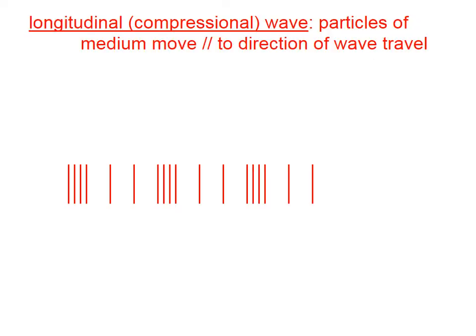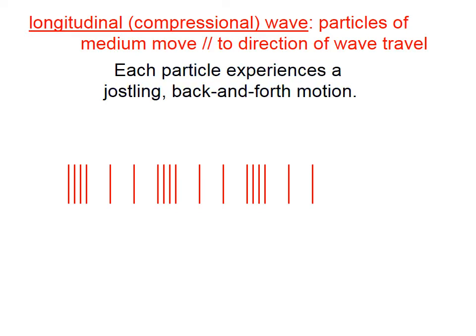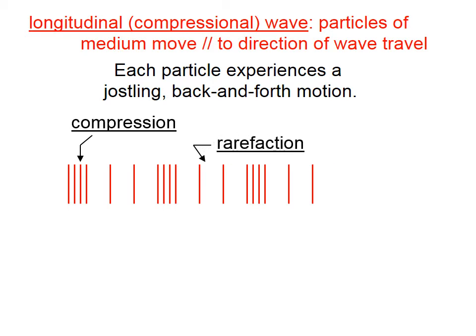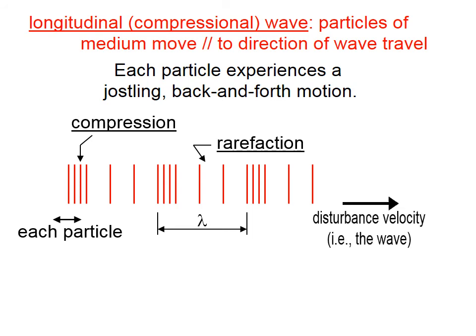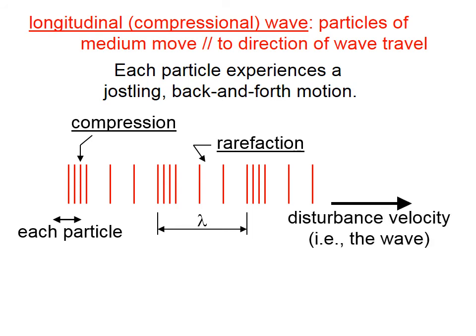A longitudinal or compressional wave is one in which the particles of the medium move parallel to the direction of wave travel. Each particle experiences a jostling back-and-forth motion. In a longitudinal wave, there are regions where the particles have a higher than normal density, and regions that have a lower than normal density. The higher-density regions are called compression regions, and the lower-density regions are called rarefactions. These rarefactions and compressions travel along with the wave disturbance — they don't stay fixed in one spot; they travel as the wave travels. Longitudinal waves also have wavelengths, and the wave disturbance travels parallel to the jostling motion, unlike a transverse wave.